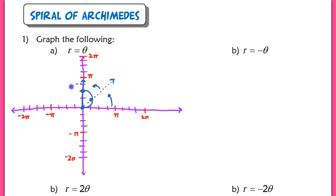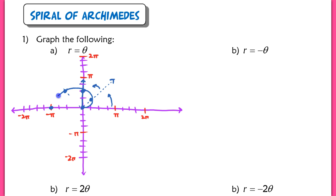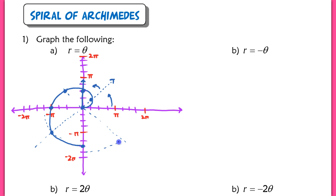As we continue to increase and rotate that angle, at 3 pi over 4, we're now 3 pi over 4 units away. Let's connect these values with a smooth curve. Once the spinner is facing pi, I am pi units away from my pole. The next obvious coordinate to graph is 5 pi over 4, then 3 pi over 2, and then 7 pi over 4, and finally 2 pi.